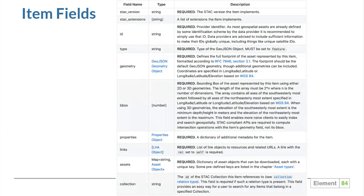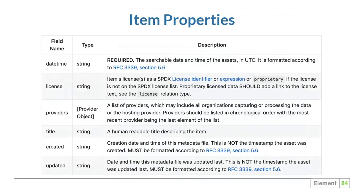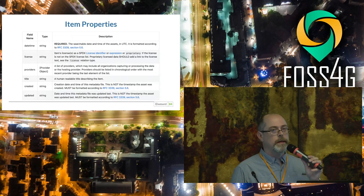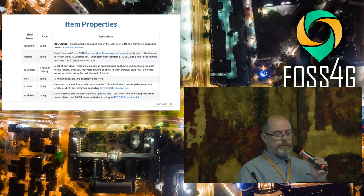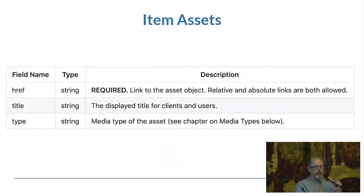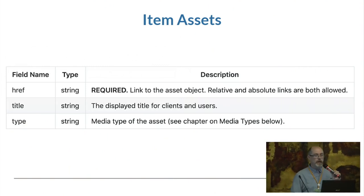Now we have the item fields. This is a GeoJSON feature, so the type is required and must be set to Feature. We have all the typical GeoJSON fields — bounding box, geometry — and we have links. The other important things are the properties and the assets. For properties, the only thing required is the datetime. The datetime combined with the geometry at the top level essentially describes your item. The assets field is what's in your item — this is the underlying data that everybody is interested in. You have a link to the data, a title, and a media type to describe the file format.